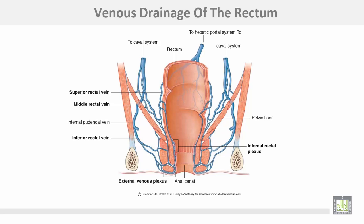Venous drainage of the rectum: the superior rectal vein drains to the portal circulation, while the middle and inferior rectal veins drain to the systemic circulation. In the area of connection between portal and systemic circulation, if there is increased pressure in the portal circulation — as in portal hypertension — this anastomosis will open and capillaries may rupture, leading to bleeding from the upper rectum or hemorrhoids (piles).